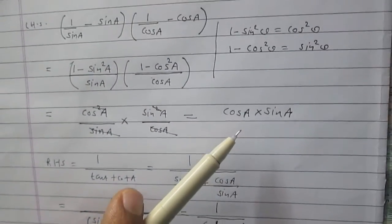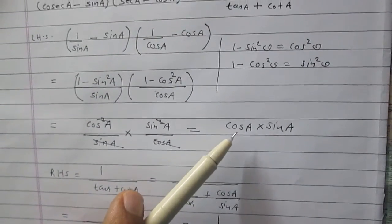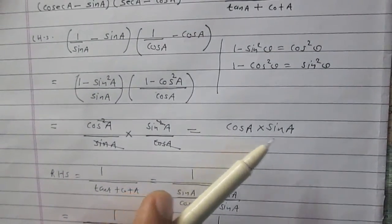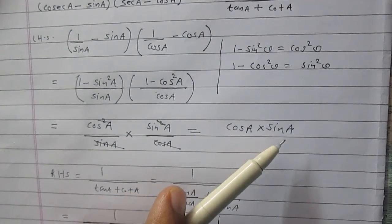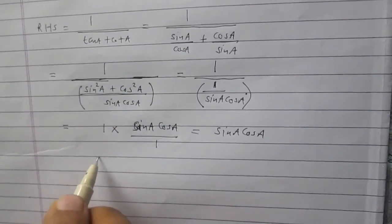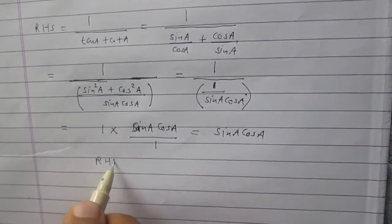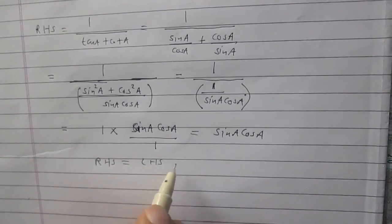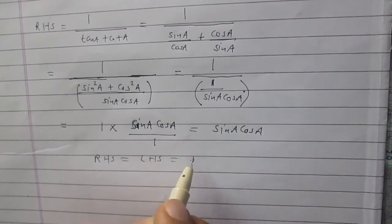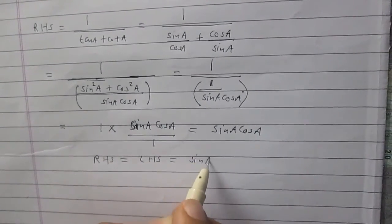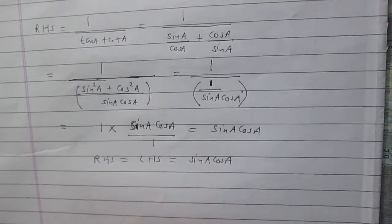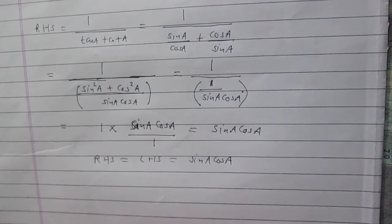We see that the right hand side is equal to sin A cos A, and the left hand side we have proved is also equal to cos A sin A. So we can say that the right hand side is equal to the left hand side, which is sin A cos A. Hence proved.